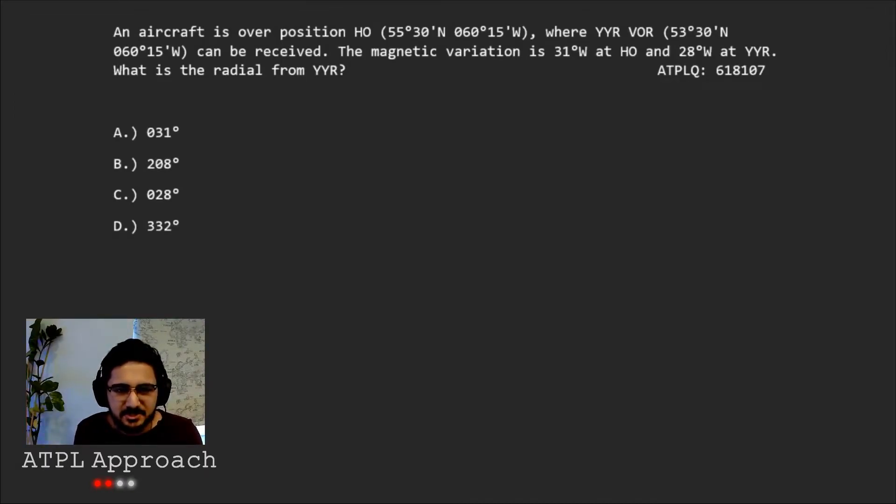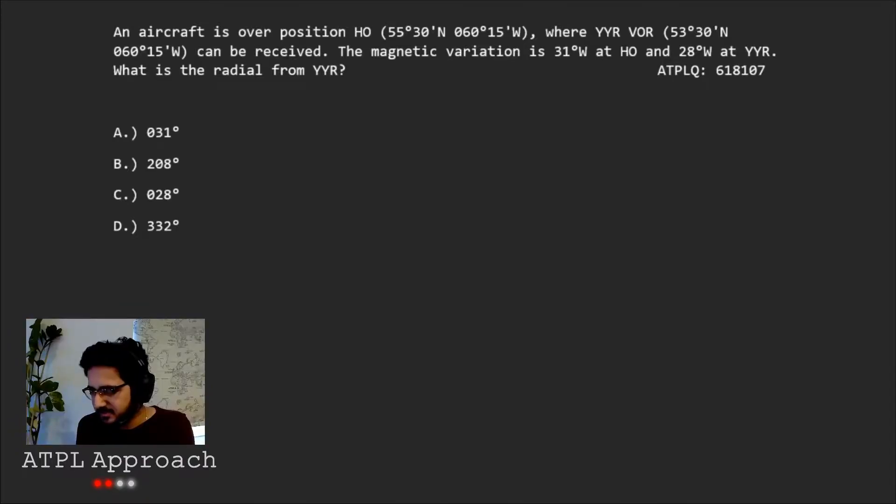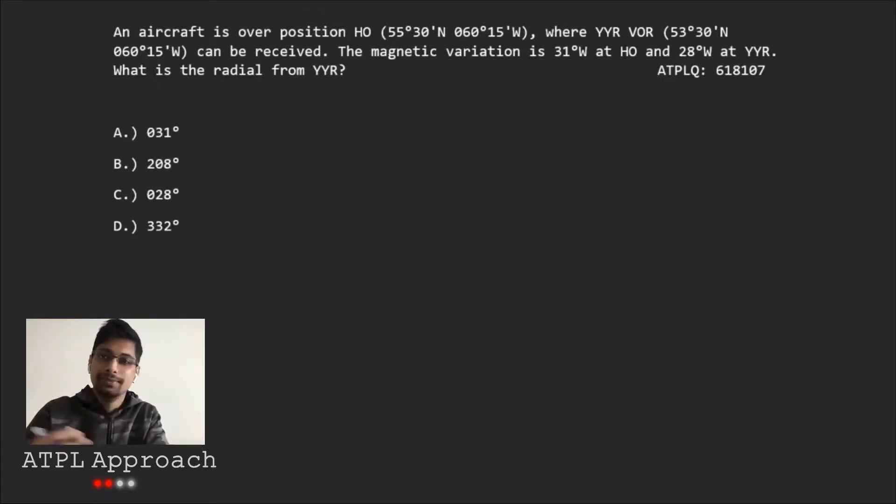An aircraft is over position HO, which sounds like an NDB, and where Yankee Yankee Romeo VOR is at those coordinates there. The VOR can be received and it tells us the magnetic variation at HO and Yankee Yankee Romeo. And it wants us to work out the radial from Yankee Yankee Romeo. Have you seen a question like this before? Oh yes, I have. So what sort of approach would you take to start it? I'm not really sure because it's been quite a while since I've gone through the questions. I just wanted to brush up on how to approach these questions.